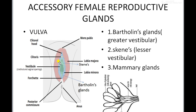Surrounding the vestibule, two folds of muscular tissue are present known as labia. The smaller inner one is known as labia minora and the large outer one is known as labia majora. Above this, a fatty cushion-like structure is present known as mons pubis, where pubic hair is also present.